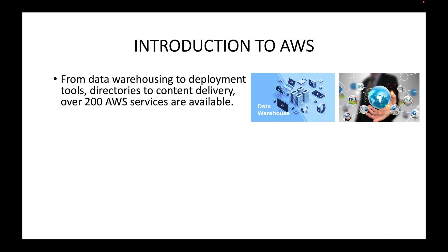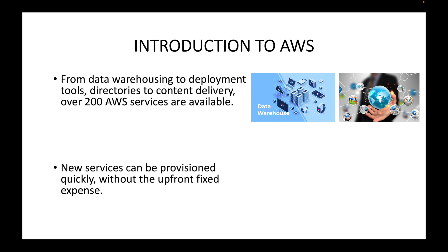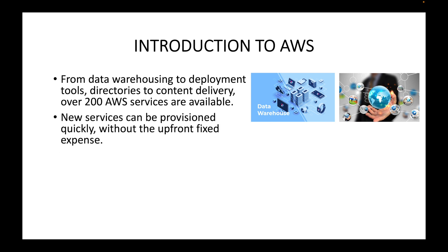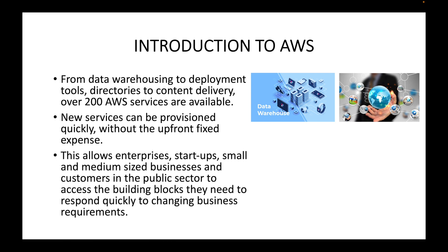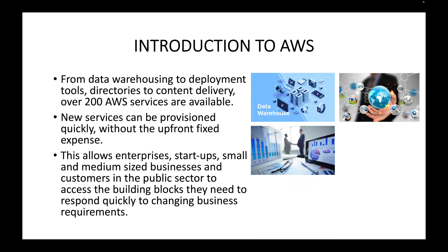AWS provides everything from data warehousing solutions to deployment tools, active directories, and content delivery. There are over 200 AWS services available — IoT services, media services, customer engagement services, networking services — all with different use cases. These services can be provisioned quickly without any upfront fixed expense; you only pay when you are actually utilizing those resources.